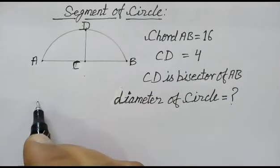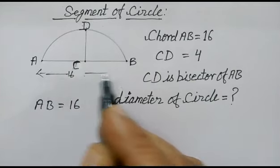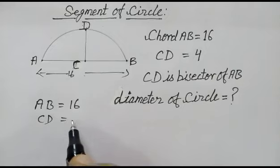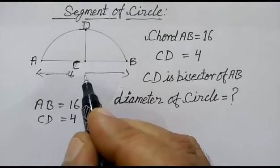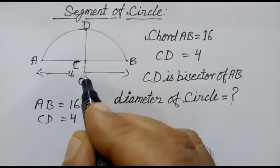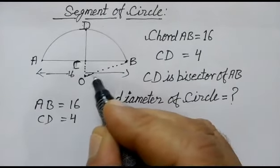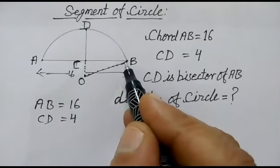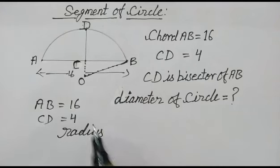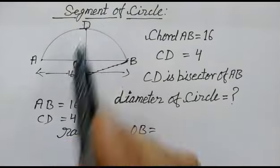Let us start. We have given AB is equal to 16 and CD is equal to 4. Let us suppose point O is the center of the circle. OB will be the radius of the circle, and OD also. So radius R is equal to OB is equal to OD.